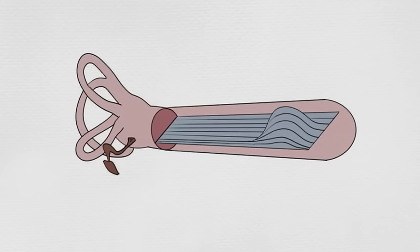To visualize the function of the basilar membrane, it can be helpful to imagine the cochlea uncoiled. When waves flow through the fluid in the cochlea, they create small waves within the basilar membrane itself that travel down the membrane.